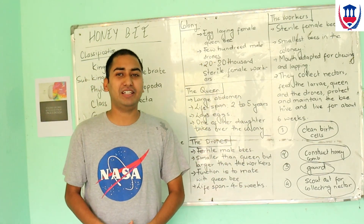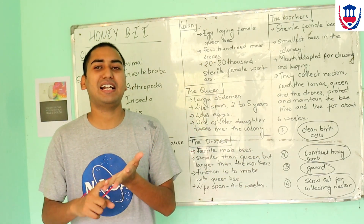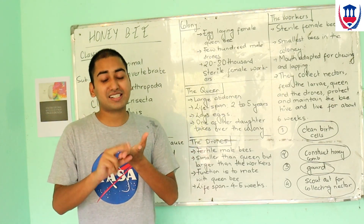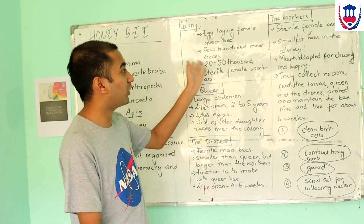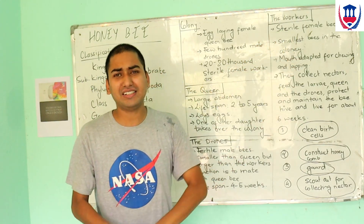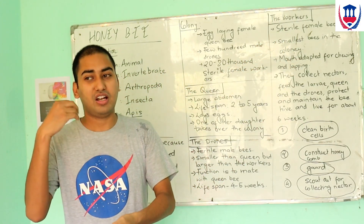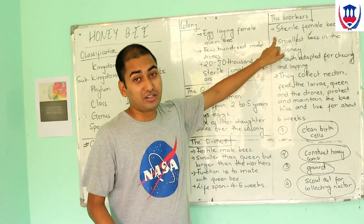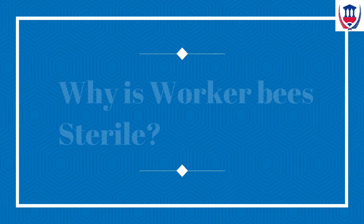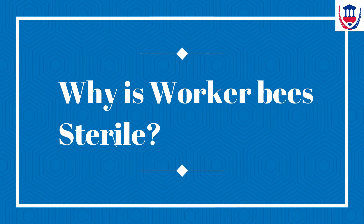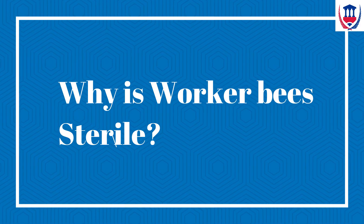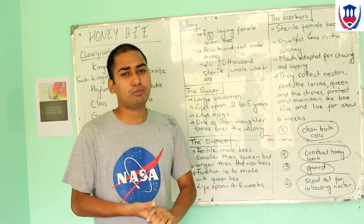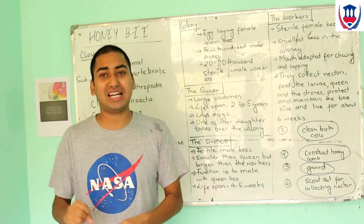The worker bee — the female is sterile, and all are workers. The female is sterile, meaning they cannot reproduce. That is the worker bee. Sterile means they lack the reproductive capability. The worker bee is the smallest member in the colony. Their mouth is adapted for chewing and lapping.